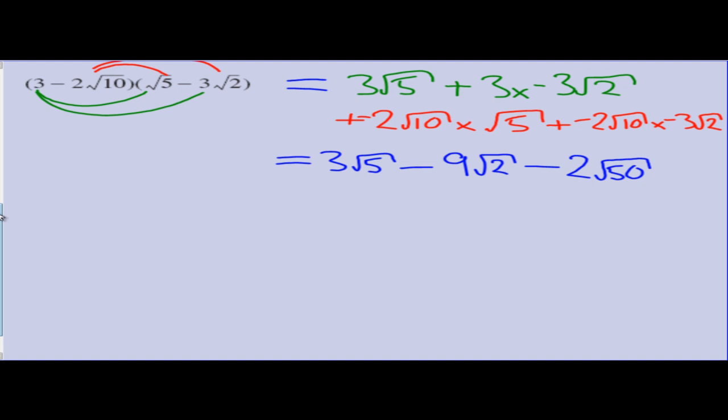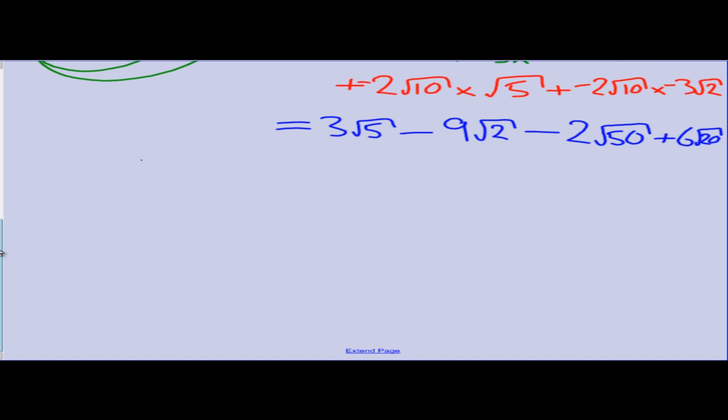And we have a negative times a negative to give us a positive. 2 times 3 is 6 and under the square root sign we've got 20. Alright, still a bit more work to do just yet. 3 root 5 is as simple as it can get. 9 root 2 is as good as it gets.